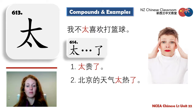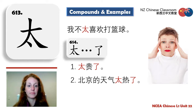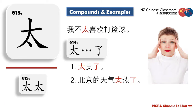Example: 北京的天气太热了 — Beijing's weather is too hot. So 太...了 is a key structure meaning 'too something.' And 太太 — this means wife or Mrs. Example: 王太太您好 — Hello, Mrs. Wang. Remember 太太 comes after the surname.